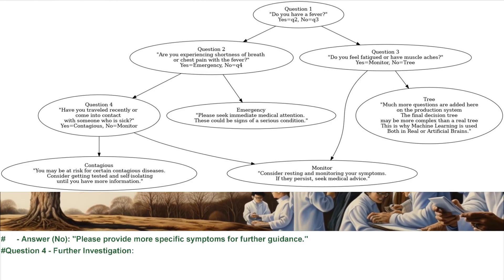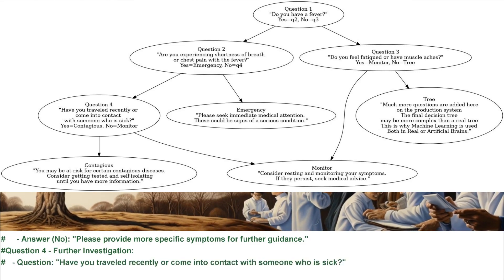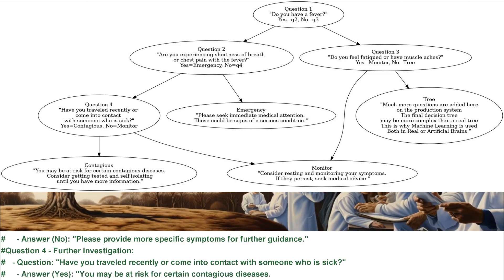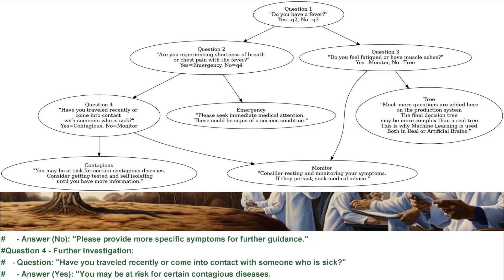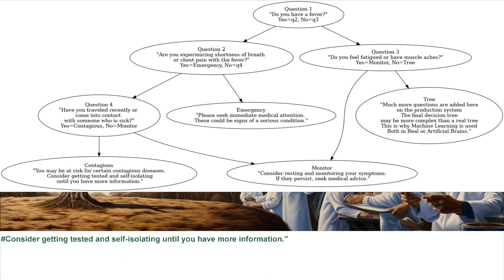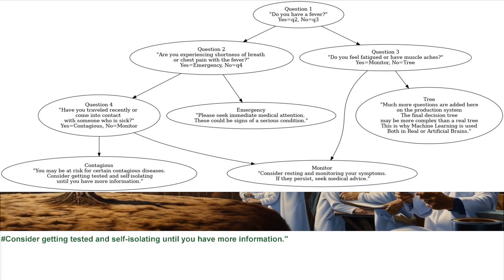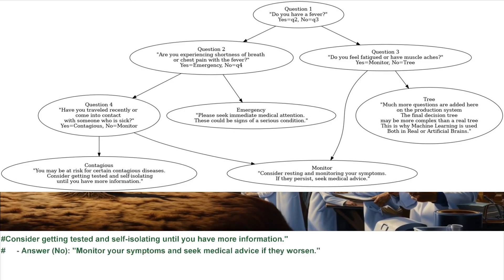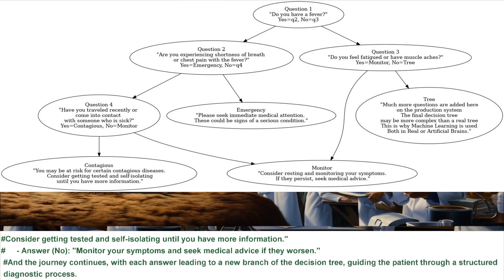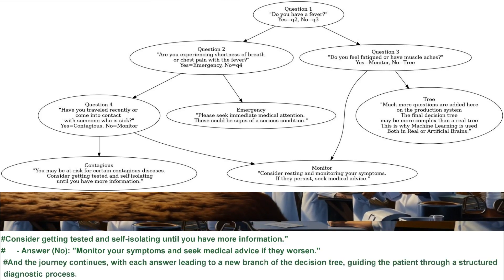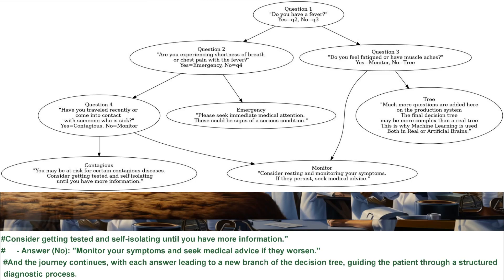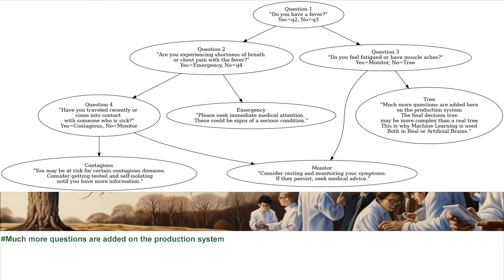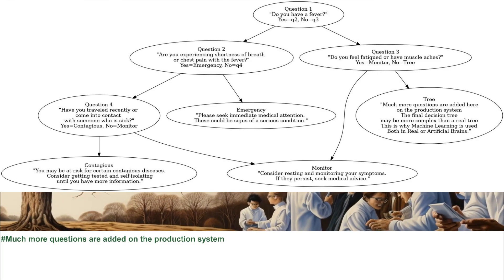Question 4, Further Investigation: Have you traveled recently or come into contact with someone who is sick? If yes, you may be at risk for certain contagious diseases — consider getting tested and self-isolating until you have more information. If no, monitor your symptoms and seek medical advice if they worsen. Each answer leads to a new branch of the decision tree, guiding the patient through a structured diagnostic process.